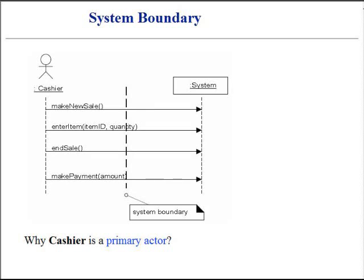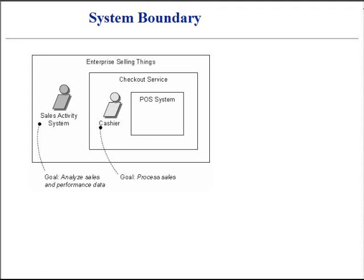Why is the cashier, and not the customer, specified as the primary actor of the use case named 'Process Sale'? Why doesn't the customer appear in the actor and goal list? The answer depends on the definition of the system boundary. If representing the whole enterprise with checkout service as one aggregate system, the customer is the primary actor, because the customer's primary goal is purchasing goods or getting services. However, from the viewpoint of just the point-of-sale system — our chosen system boundary — the application serves the cashier's goal: to process the customer's sale. Therefore, the cashier is the primary application actor of the system under design.